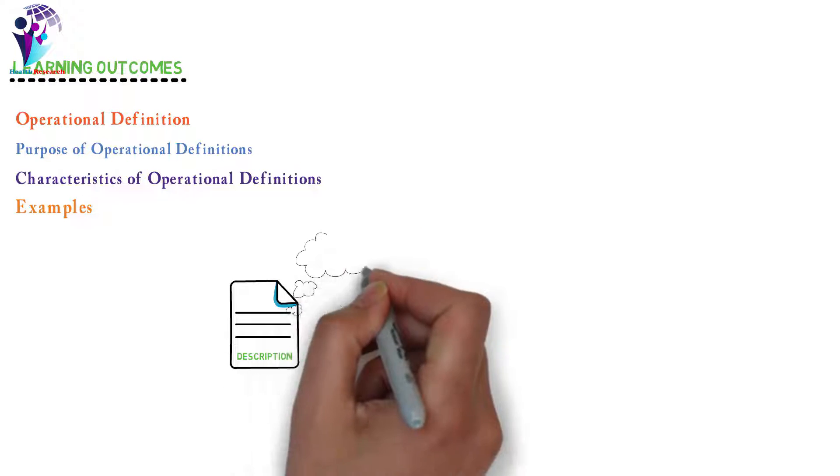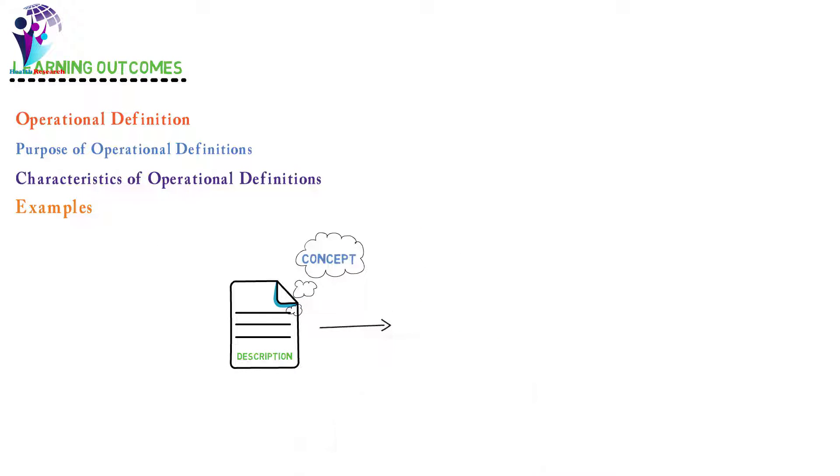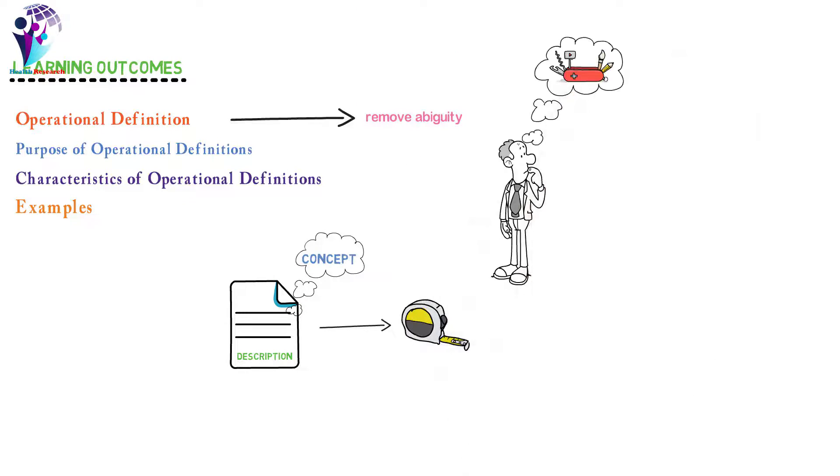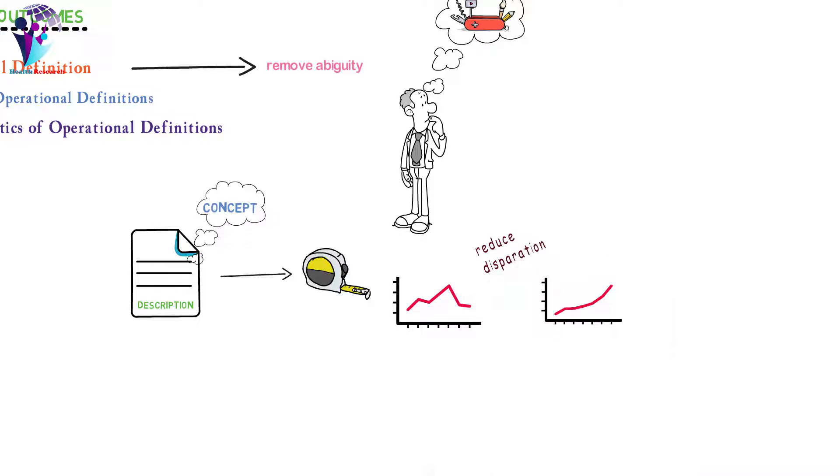An operational definition is a description of a concept in measurable terms. It is used to remove ambiguity, to serve as a guide for the selection of measurement tools, and to reduce the likelihood of disparate results between different data collections.